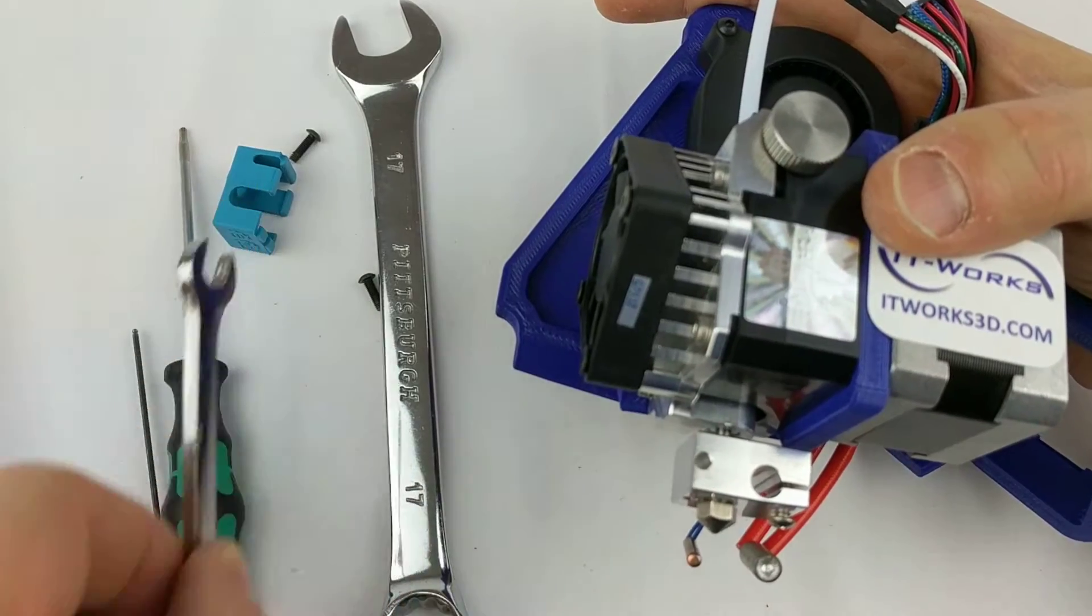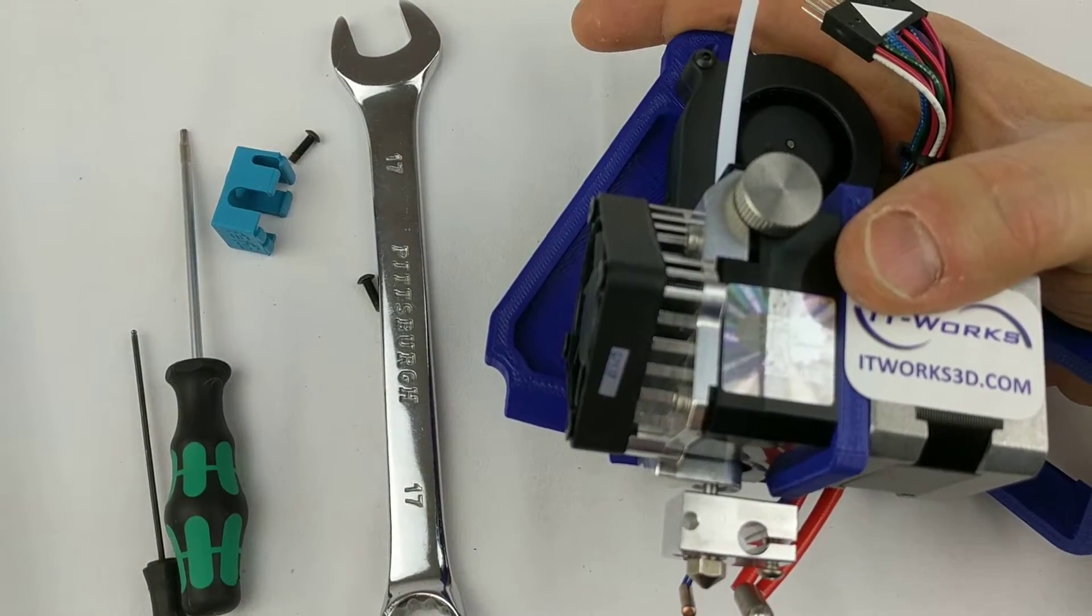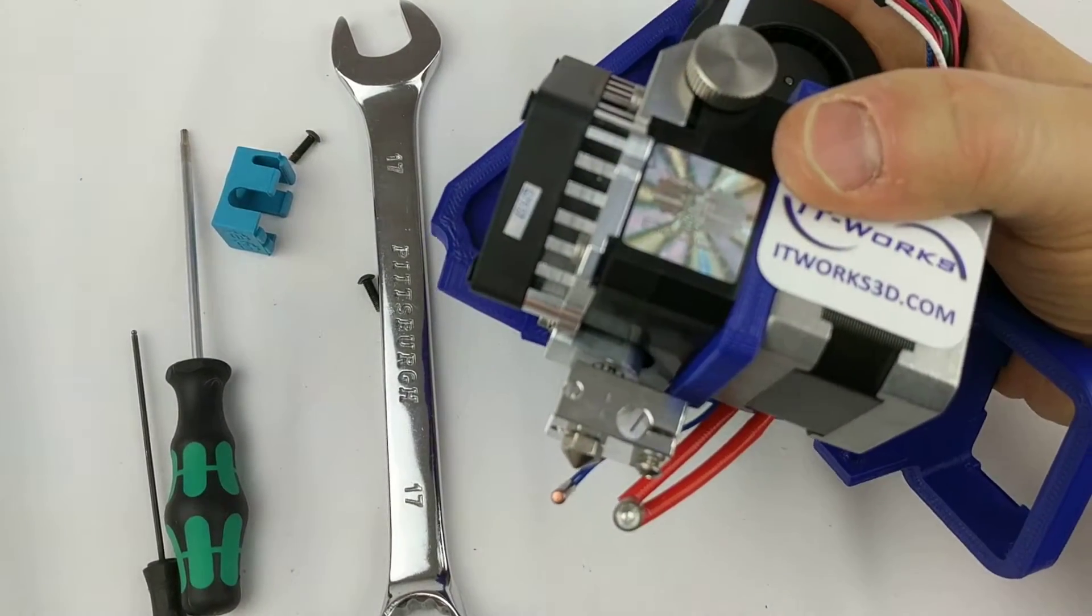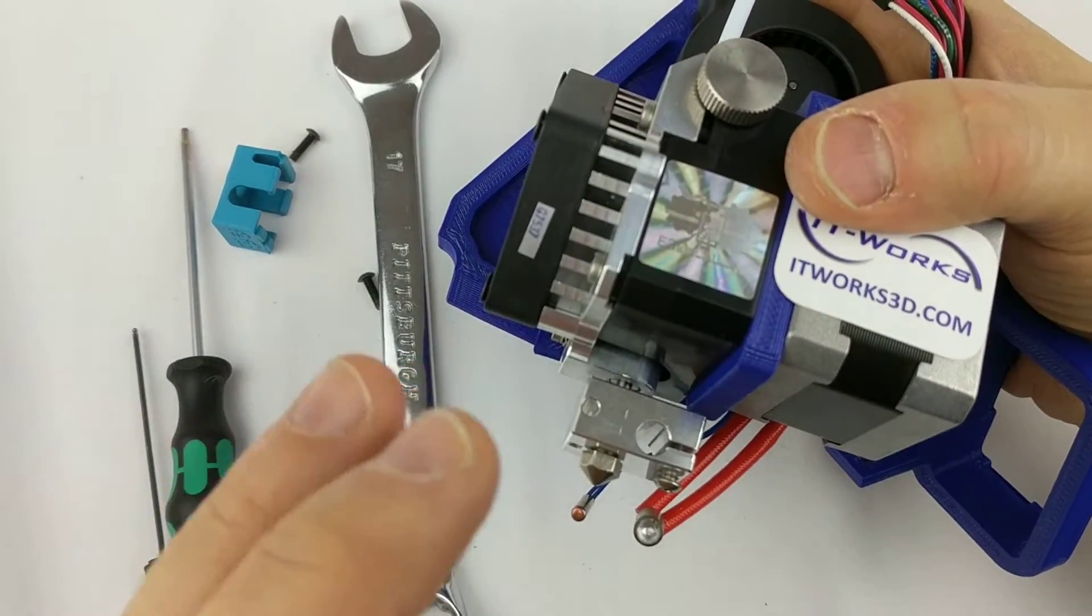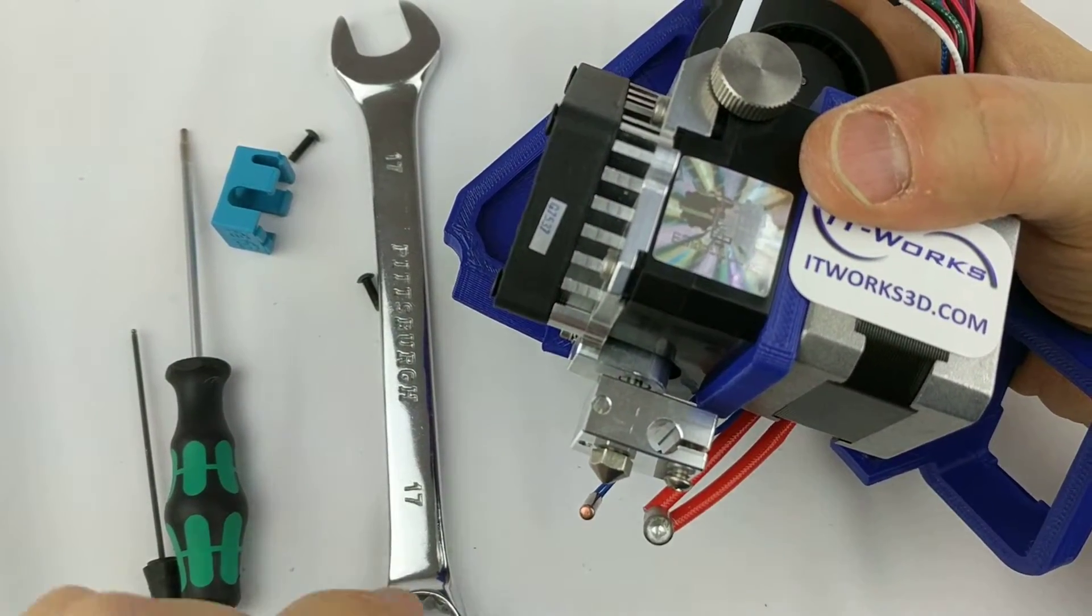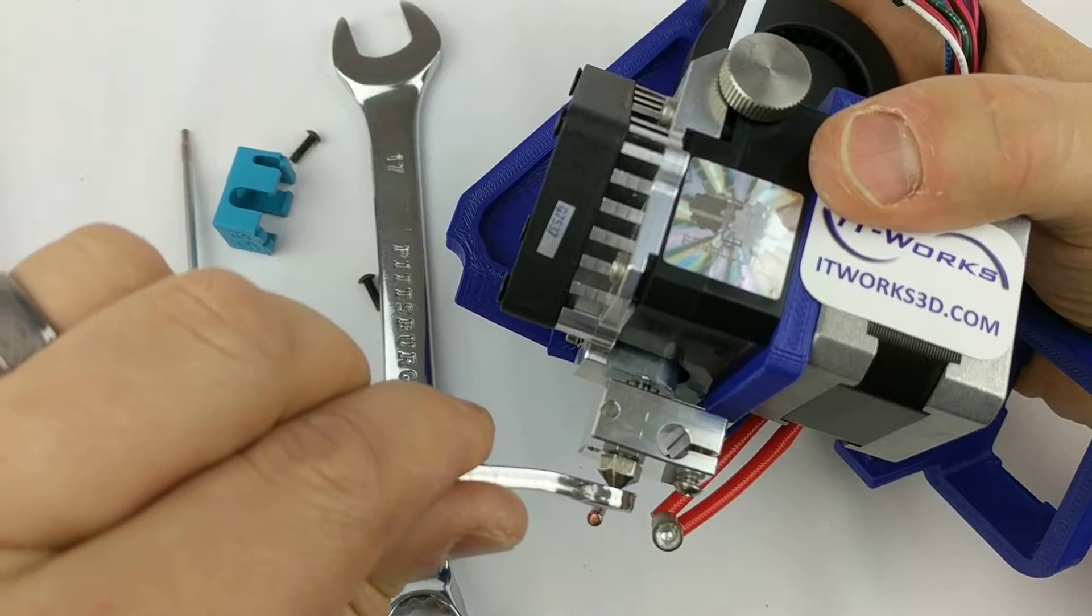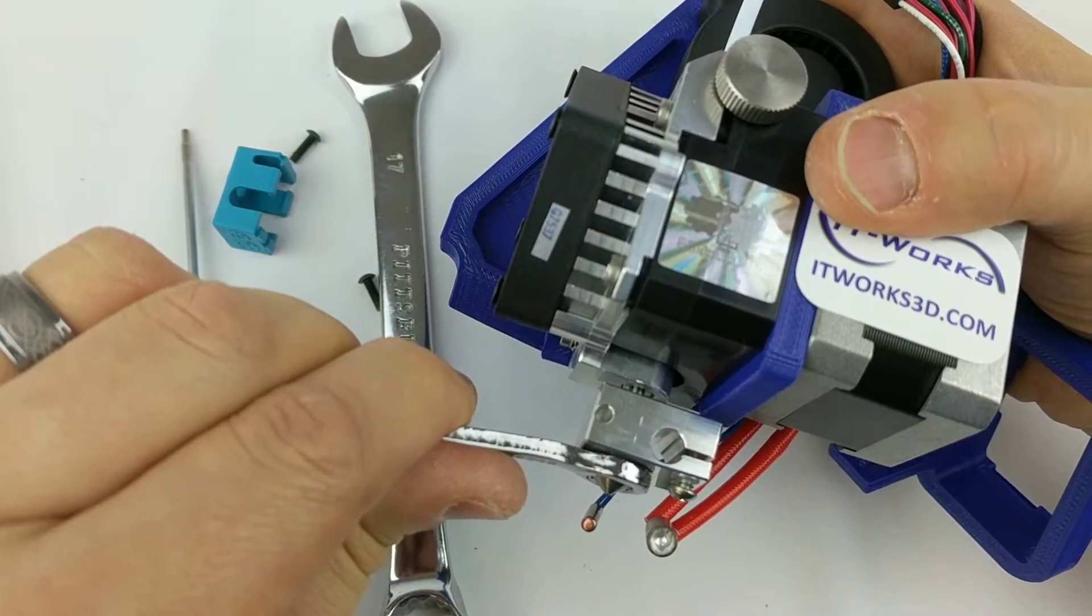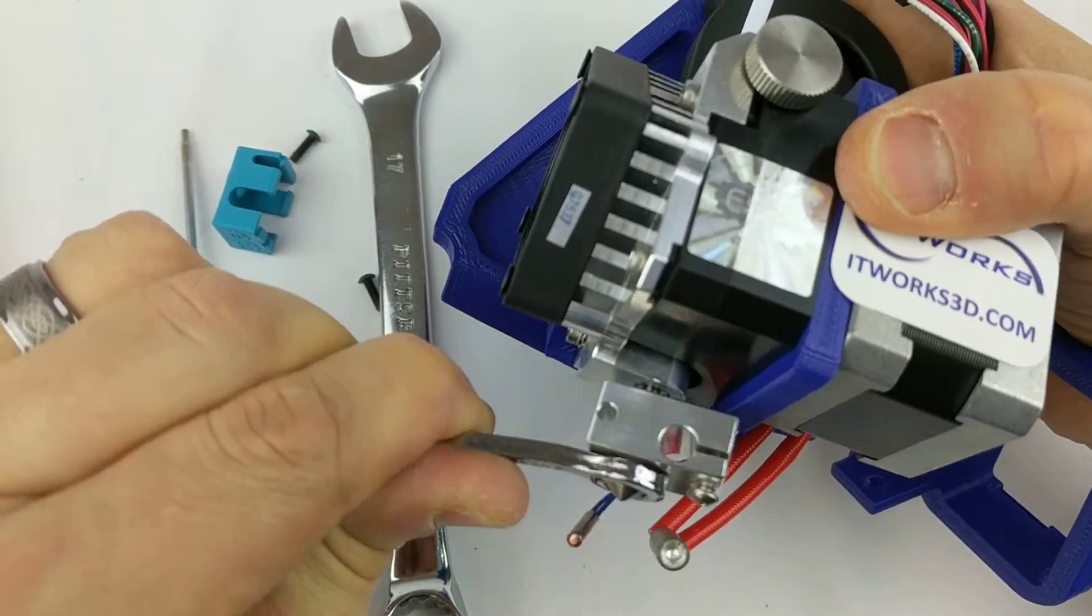At this point, what I usually suggest is, if you can, preheat the tool head to 250 or so, but then you're working with hot stuff. I'm going to try and do this cold. So what I'll usually do is place the wrench on here and just loosen.